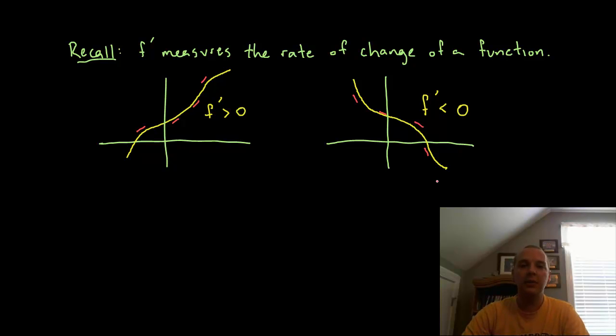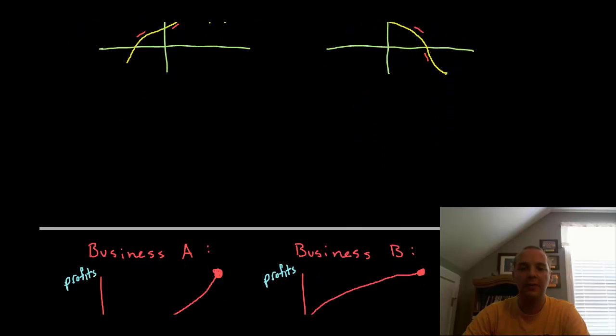Positive slopes or positive derivatives indicate where a function is increasing or going up, and negative slopes indicate where the function is decreasing or going down. This will help us with our definition of concavity.